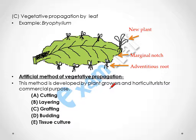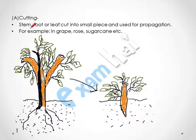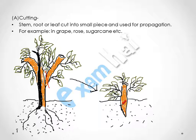Now we will consider the artificial method of vegetative propagation. This method is developed by plant growers or horticulturists for commercial purposes. We will discuss cutting, layering, grafting, budding, and tissue culture — tissue culture being the most modern technique. In cutting, a stem, root, or leaf is cut into a small piece and used for propagation. For example, in grape, rose, or sugar cane — the stem is cut and put into the soil; after some time it develops roots and grows into an individual plant.